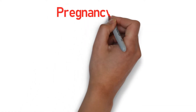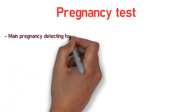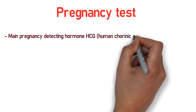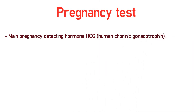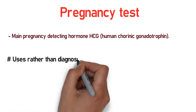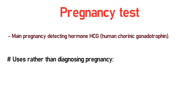The main hormone that a pregnancy test detects is HCG, which stands for Human Chorionic Gonadotropin. You may be surprised to learn that pregnancy test kits are also used for things other than diagnosing pregnancy. Yes, there are some important uses of pregnancy tests besides detecting pregnancy alone.